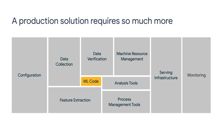machine resource management, feature extraction, process management, serving structure, monitoring, and so on. Too many people are surprised — ML code is just one tiny piece in the entire system. There are many, many aspects in any production ML system. In this video series, we're going to focus only on the serving infrastructure part, which is the critical part in MLOps.